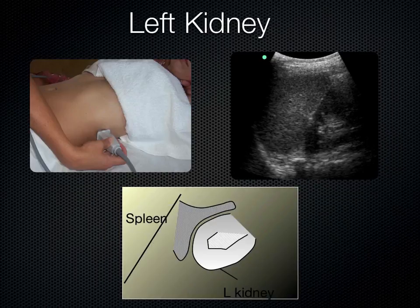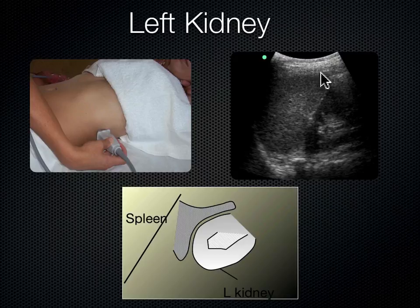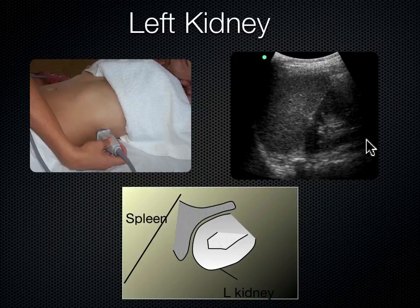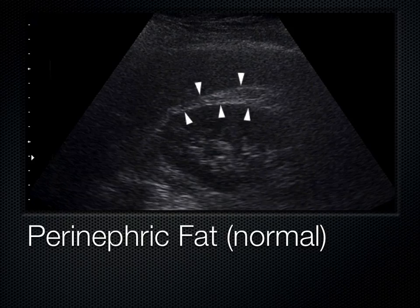The left kidney is more towards the head and more towards the bed — meaning more superior and more posterior. The tip of the spleen is a little smaller than the liver, so we lose part of the left kidney's window when taking that coronal approach. Many times, we need to get more posterior on the left kidney — come around the back a bit more.